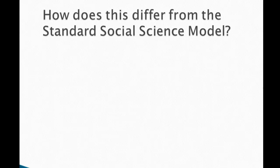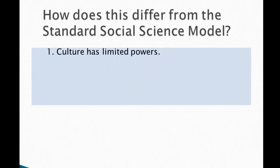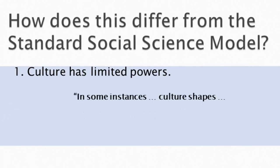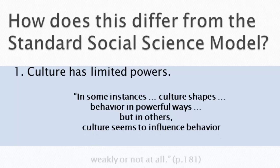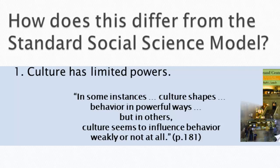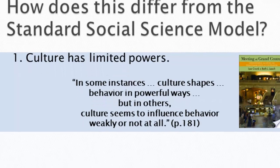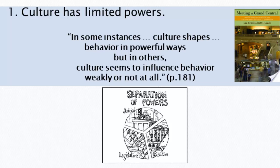So how does dual inheritance theory differ from the standard social science model? The first difference is that culture has only limited powers. As the authors of 'Meeting at Grand Central' express it, in some instances culture shapes behavior in powerful ways, but in others it influences behavior weakly or not at all. Culture works within corridors — like the separation of powers in American government, culture is just one power and genes are another.